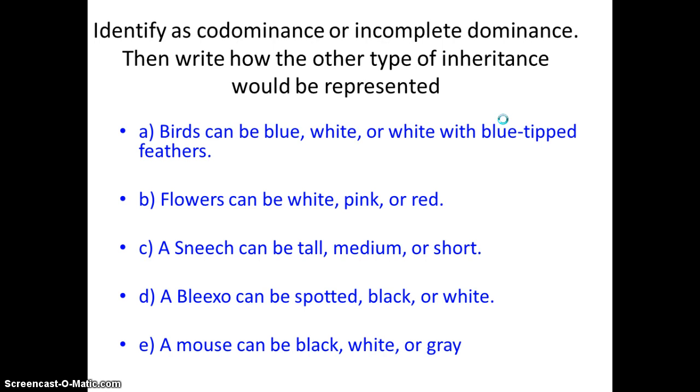So this is sort of to see the difference between codominance and incomplete dominance. Take a second, and based on what we've learned, determine if these traits are codominant or incomplete dominance. So if we look at the first one, birds can be blue, white, or white with blue-tipped feathers, that's codominance. Because you're seeing both colors, not a blend. For B, flowers can be white, pink, or red. That's a blend. So that's incomplete dominance. A snitch, and obviously these are made up, can be tall, medium, or short. That one you can argue about. You're not really seeing both phenotypes. You can't be both tall and short at the same time. So that's incomplete dominance. A bleex, so whatever that is, can be spotted black or white. Since if it's spotted, you're going to be seeing both the black and white phenotypes. So that would be codominance. And then a mouse can be black, white, or gray. Since that's a blend, that is incomplete dominance.